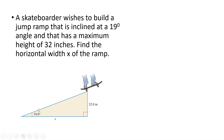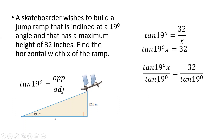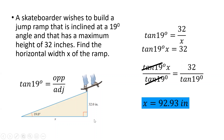With 19 degrees as the reference angle, the opposite side is 32 inches (the height) and the adjacent side is x (horizontal width). We use tangent: tangent 19° = opposite/adjacent = 32/x. Cross-multiplying: tangent 19° × x = 32. Dividing both sides by tangent 19°: x = 32 ÷ tangent 19° = 92.93 inches. The horizontal width of the ramp is 92.93 inches.